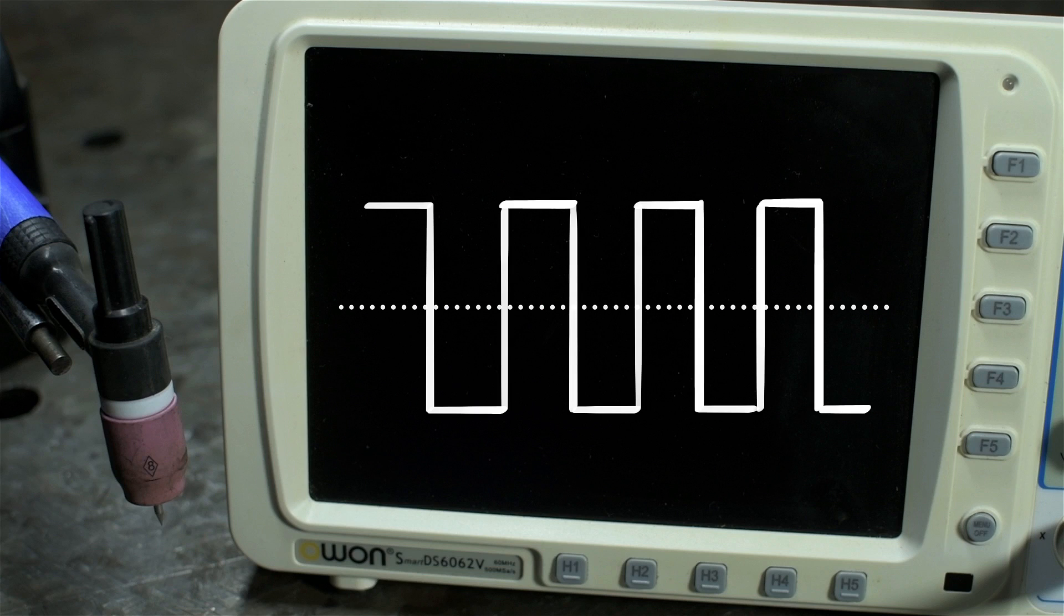some more advanced welders, like the HTP in this case, allow you to change the waveform symmetry. You can dial in more positive than negative, or more negative than positive.